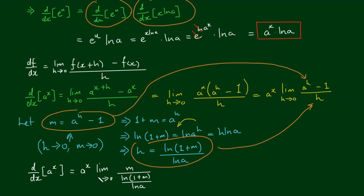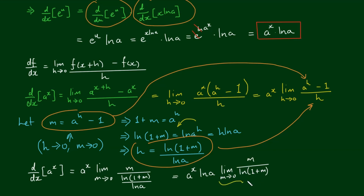Since log of a is independent of m it can come out the front, giving a to the x times log of a times the limit as m approaches 0 of m divided by log(1+m). From our previous video, this limit evaluates to 1. So we end up with a to the x times log of a times 1, which of course equals a to the x times log of a.